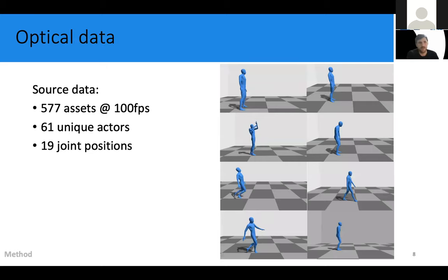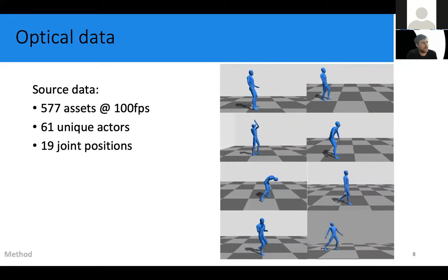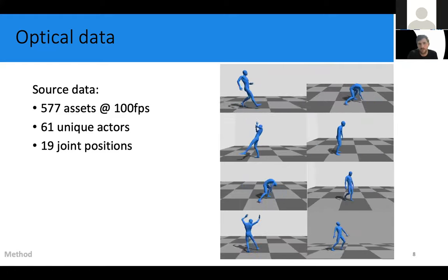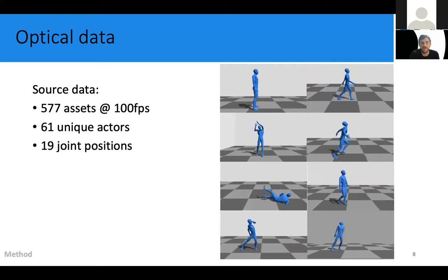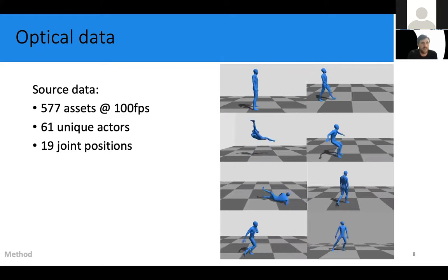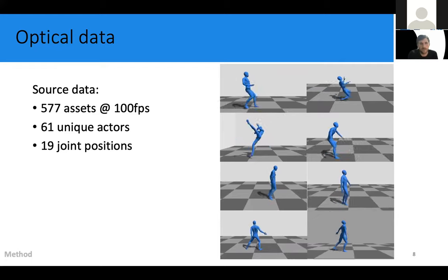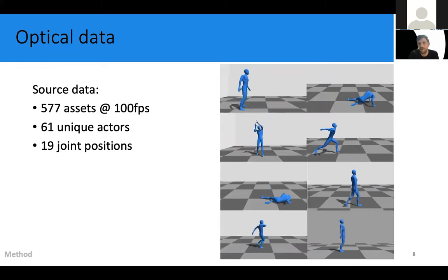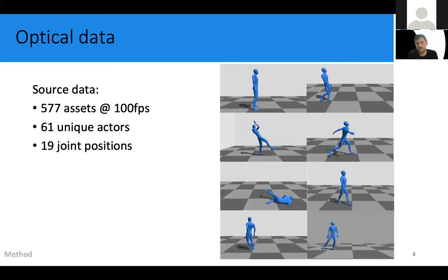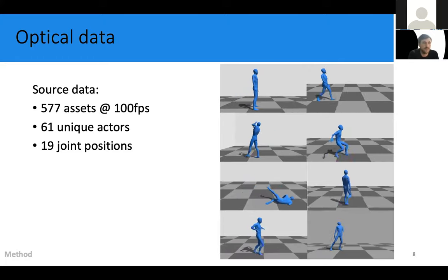So a little bit about the data that we've been using. Here you can see a bunch of examples of the datasets that we have used to train our models. So the raw data comes from Rococo's motion library, which is a commercially available database. And it contains a broad range of optical motion capture assets recorded by different studios and different actors. So we chose optical motion data because it is readily available and it contains the ground truth positions already that are necessary for training.